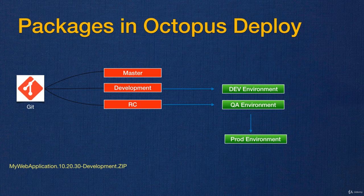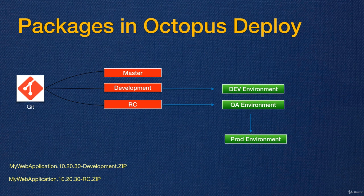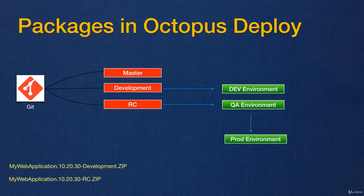For example, if my package name is 'MyWebApplication' and the build version is 10.20.30, I can incorporate the branch name into the package version as a tag selector. If I build code from the development branch, my package version will be 10.20.30-development. If I build from the release candidate branch, it will be 10.20.30-rc. I can then put a rule in Octopus Deploy saying that any package going to QA or production must have the tag selector '-rc', filtering out all others.